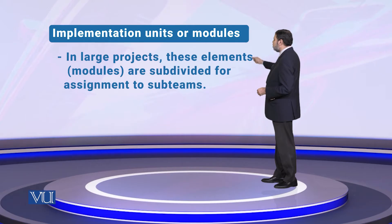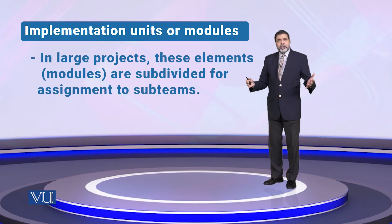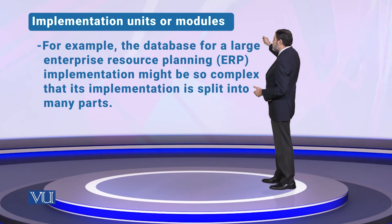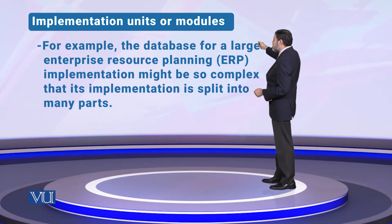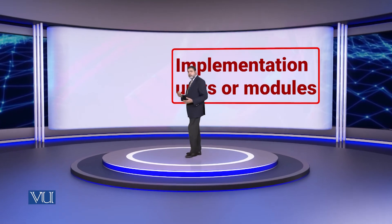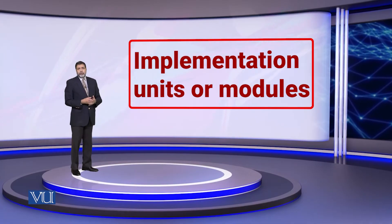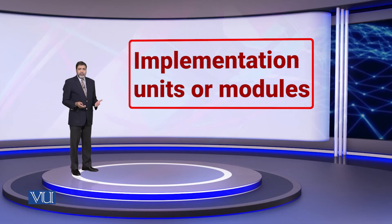In large projects, these modules are subdivided for assignment to sub-teams. For example, a database for a large enterprise resource planning — that is, an ERP system implementation — might be so complex that its implementation is split into many parts. Depending upon the size and complexity of the problem, you need to divide it further, in a way that is meaningful. A high level of abstraction will remain, so you can manage and assign it properly.